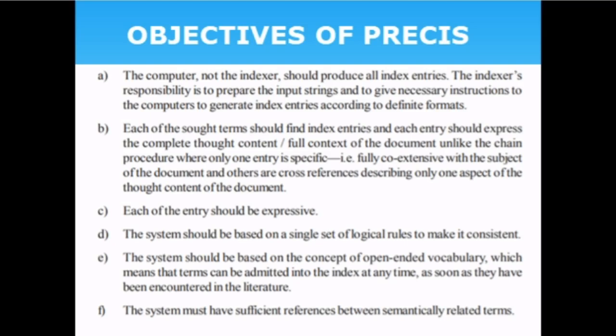Each of the sort terms should find index entries, and each entry should express the complete thought content. The heading under which the user is likely to look for a particular document is the sort term. Indexing is a surrogate — a substitute — and should exactly represent the content of the document. Each entry should be expressive, not limited. The system should be based on a single set of logical rules to make it consistent — not a combination of several rules.